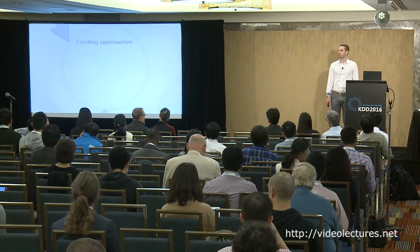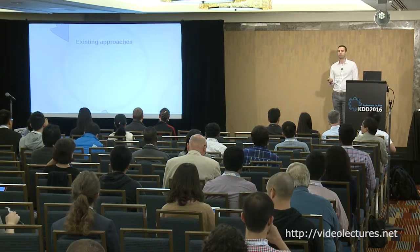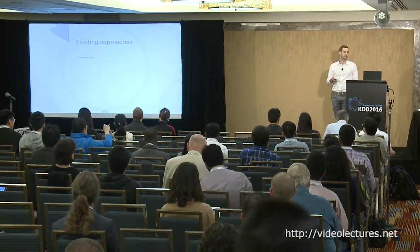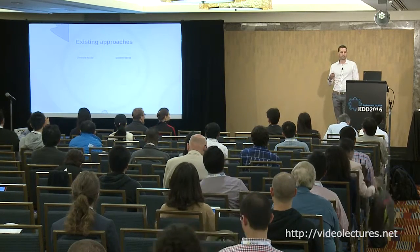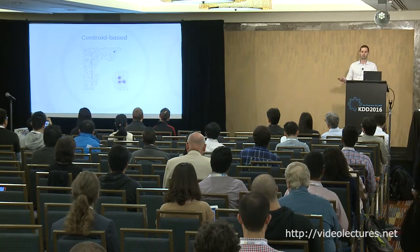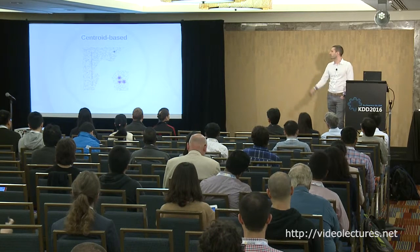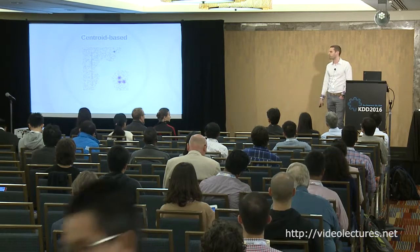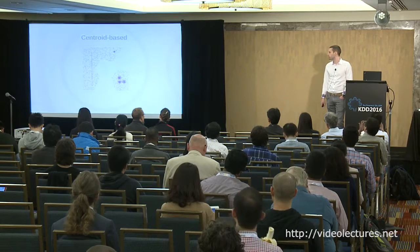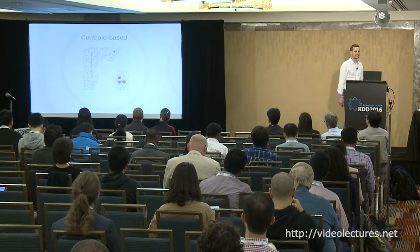How do existing approaches fare on this kind of data? Let's look at a couple of the main paradigms — centroid-based and density-based — to highlight key limitations. Boring old k-means, given k equals six (the correct number of clusters), gives a result like this. One takeaway is that many centroid-based techniques don't really have a clear concept of noise. We see it trying to assign every point to a cluster, so we find clusters composed purely of noise points, which is not particularly useful.